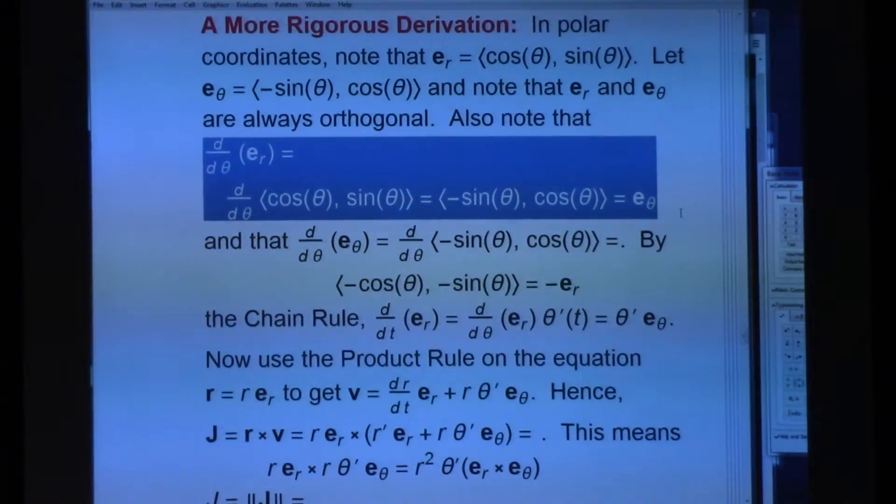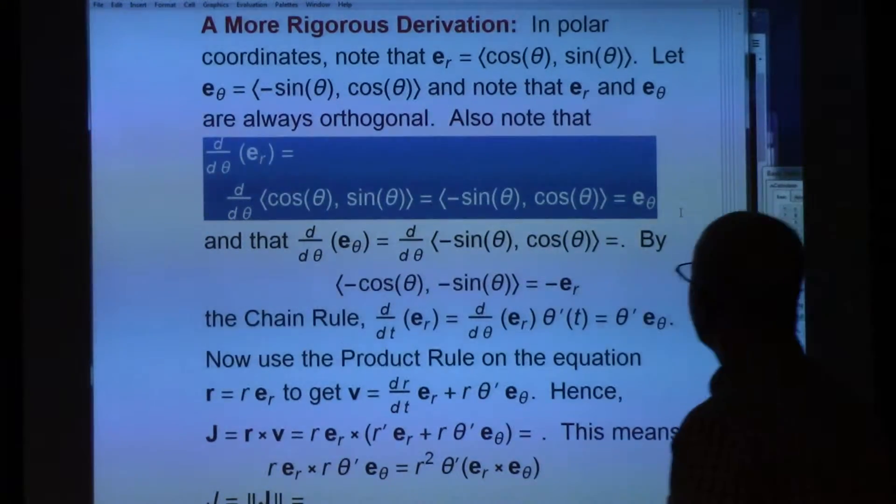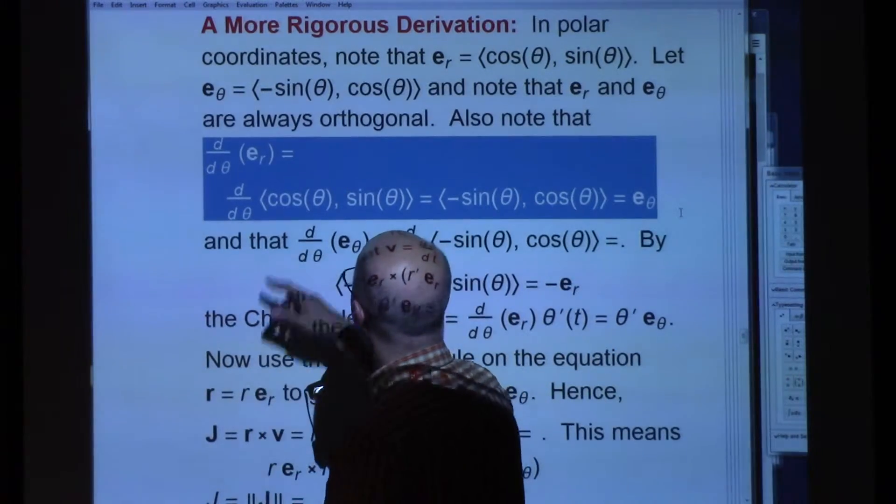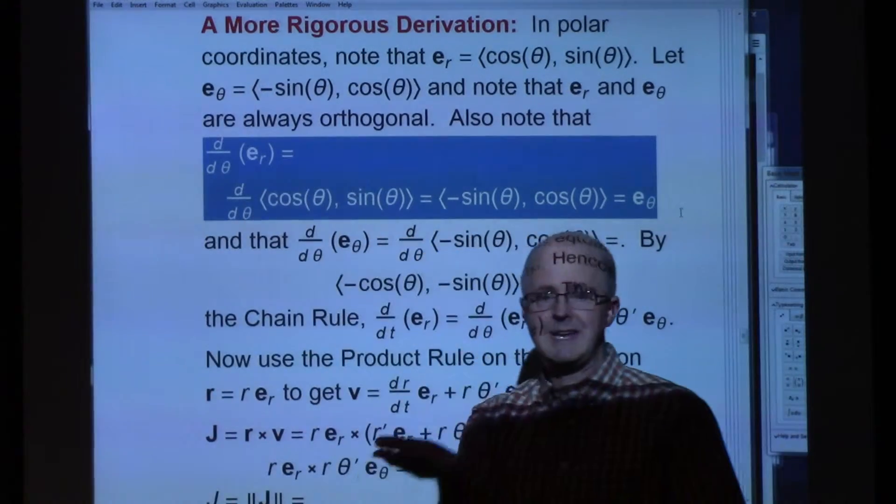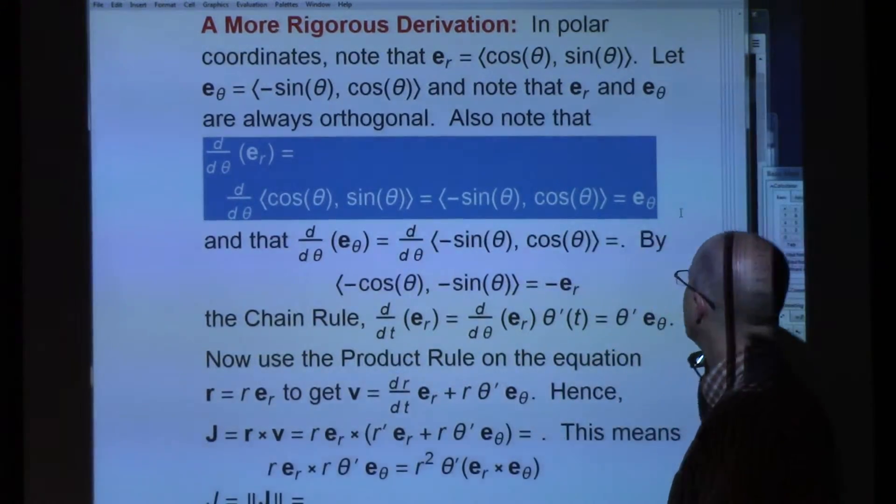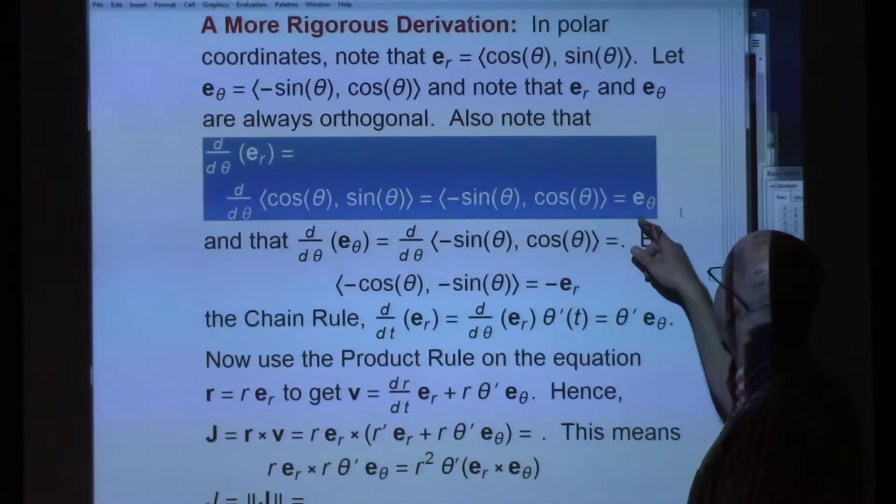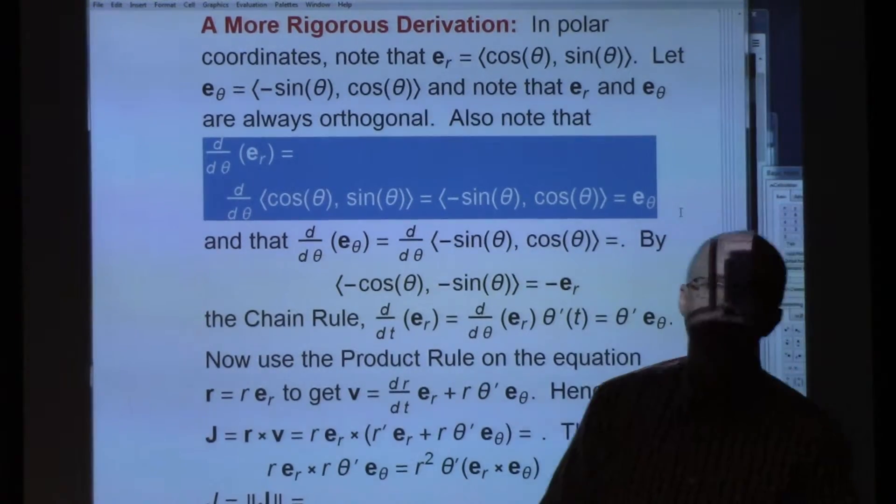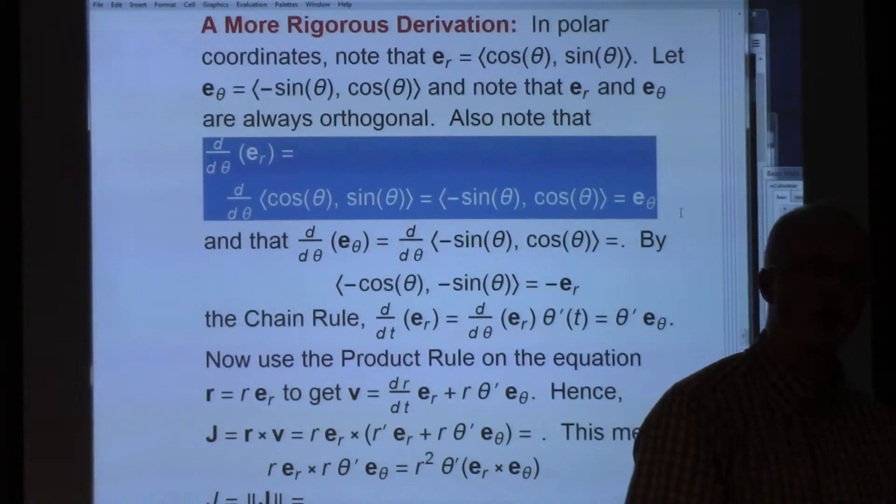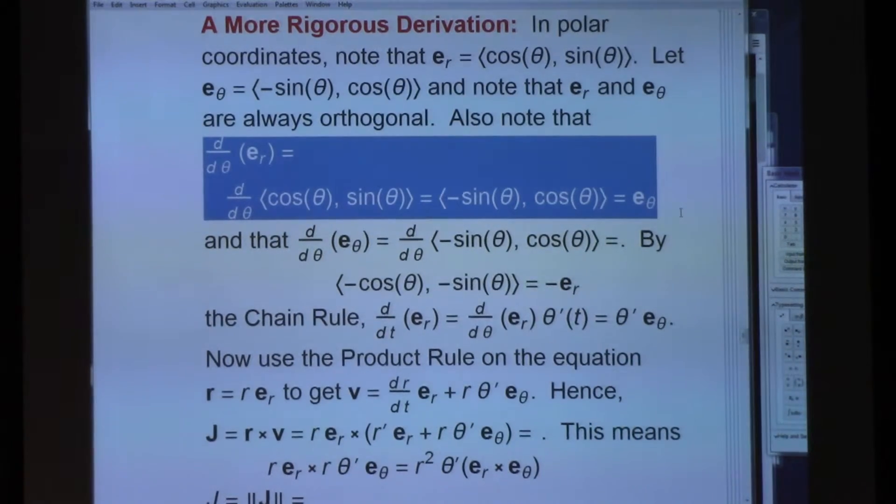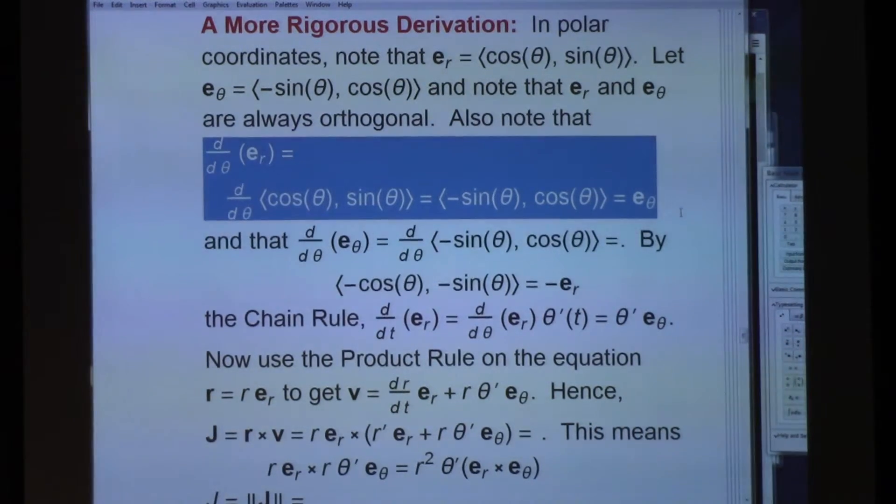The change of ER as theta changes. For a small increase in the angle, say 0.1 radians, you can approximate the change in ER, which will be an angle change, as E theta times 0.1 radians. It would be the approximate change in ER as a vector change. I won't bother drawing a picture. If you want, you can think about that on your own.